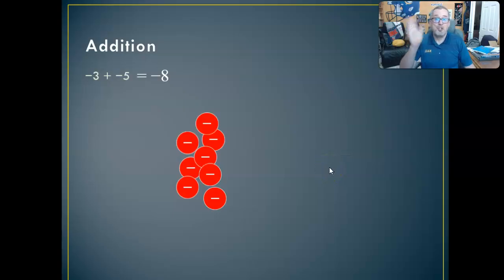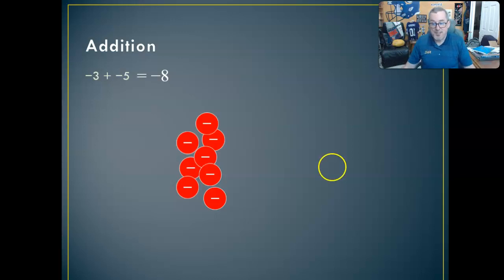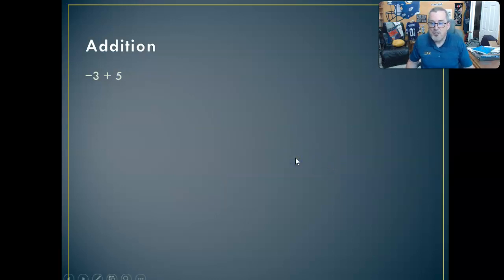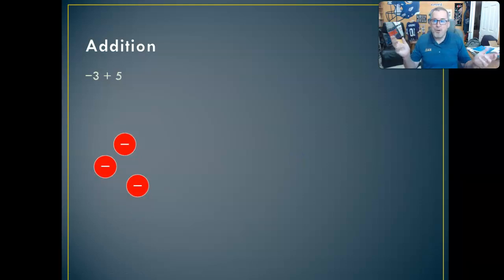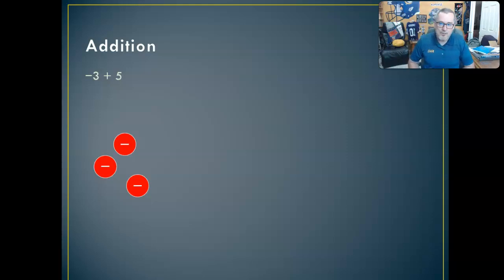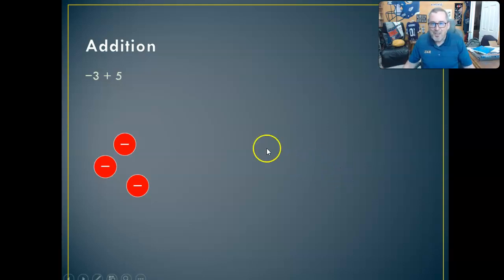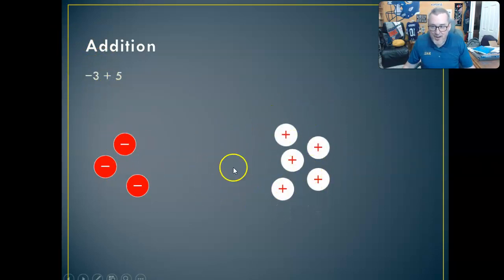We've seen a situation with two positive numbers — three plus five — and a situation with two negative numbers — negative three plus negative five. But what if you have one of each? Negative three plus five. Just go back to the thinking. We don't have to remember a rule. Some students would sing 'same sign add and keep, different sign subtract, keep the sign' — and while that's true as trivia, it's not mathematical thinking. Let's go back to mathematical thinking. You've got three negatives and five positives. Addition is an action — we're going to combine those two quantities.